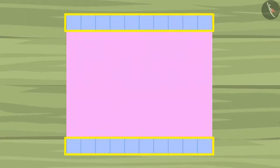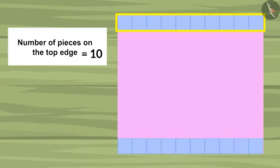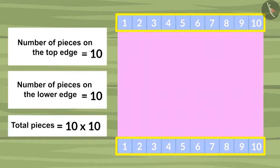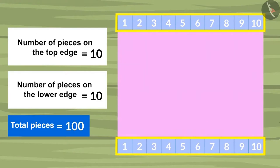Yes, there are pieces placed on two sides. Now we can multiply them. There are ten pieces placed on the top edge and there are ten pieces placed on the lower edge. When we multiply them, we get the answer hundred.